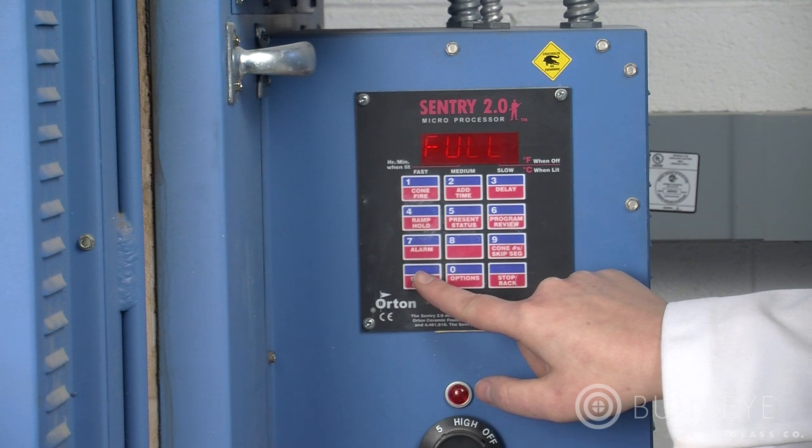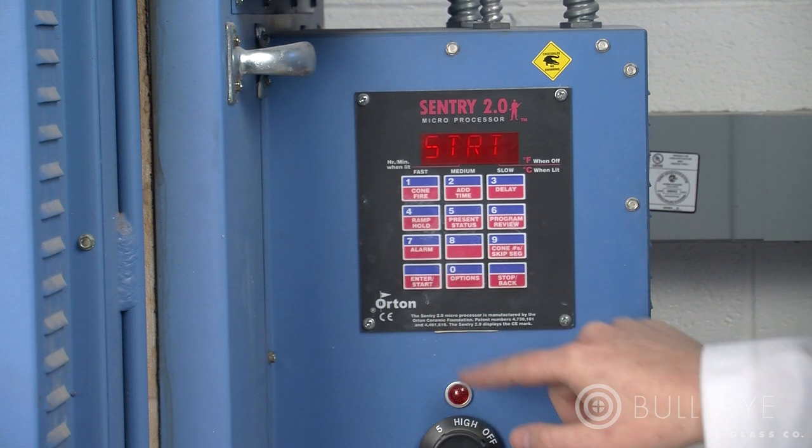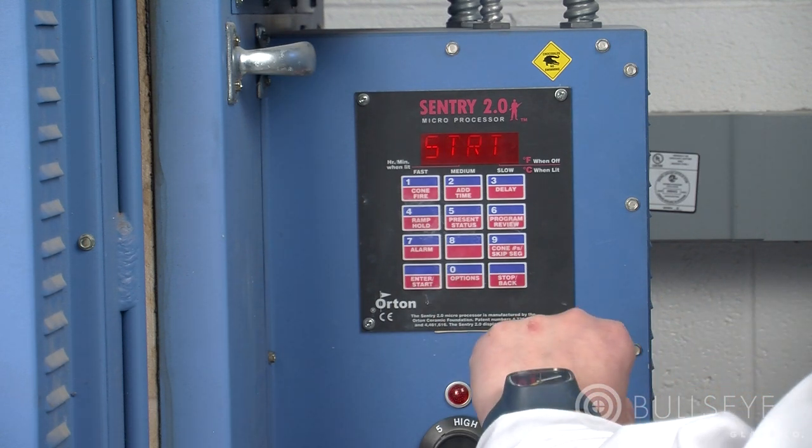Due to the variables involved, visual confirmation of slumping in progress can be very informative and helpful in determining future firing cycles.